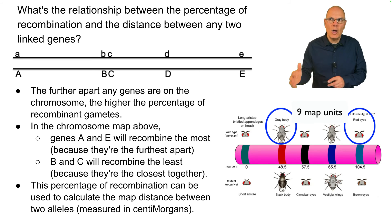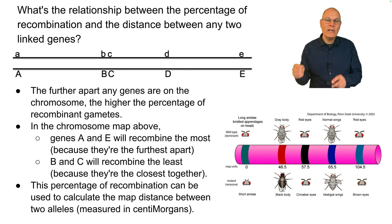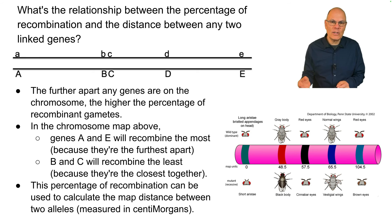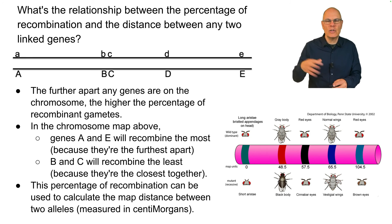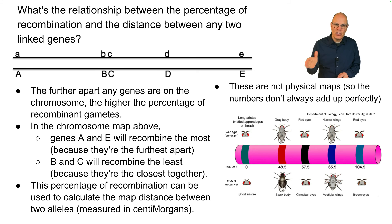By conducting these mapping and breeding experiments with fruit flies, researchers at Columbia University in the 1900s — Thomas Hunt Morgan and his crew — were able to create maps of chromosomes. This established that genes are on chromosomes and was part of the pathway that ultimately led to the discovery of the double helix. Note that these are not physical maps, so the numbers don't add up perfectly, but this provides a basic understanding.